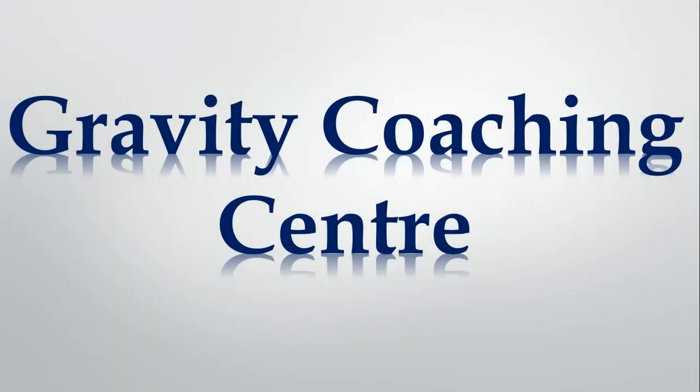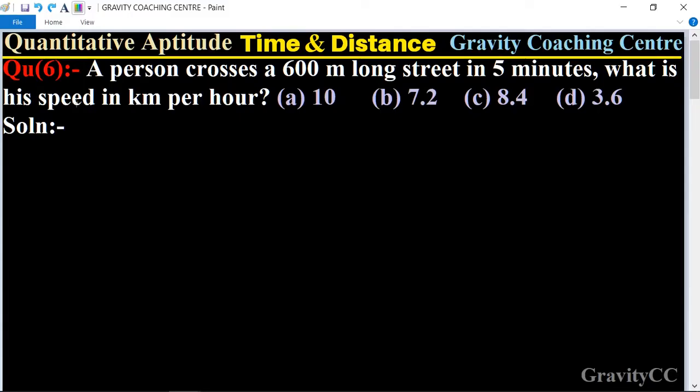Welcome to our channel, Gravity Coaching Center. Quantitative Aptitude, chapter Time and Distance, question number six: A person crosses a 600 meter long street in five minutes. What is his speed in kilometer per hour?